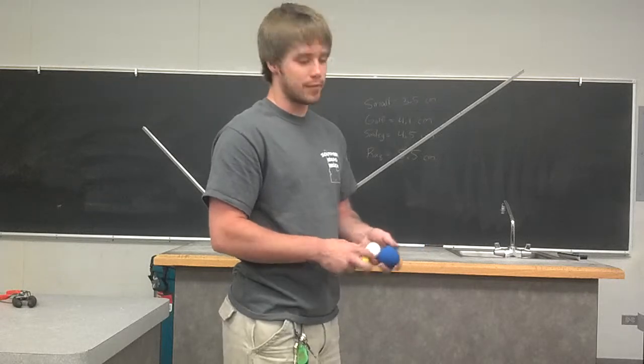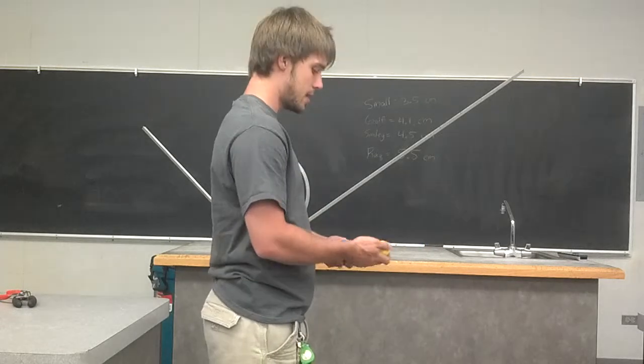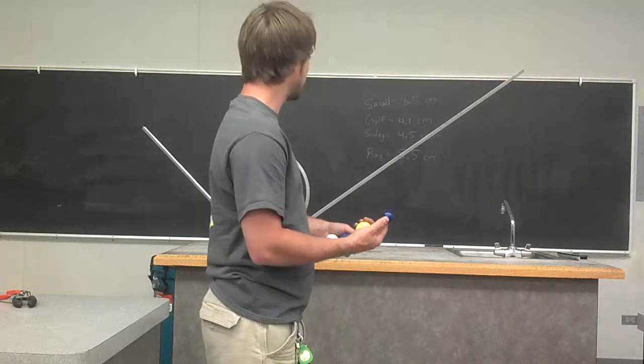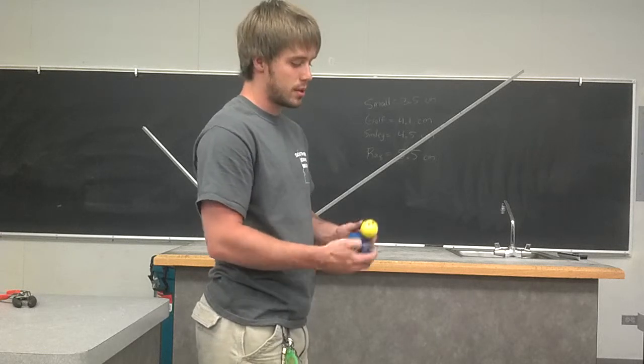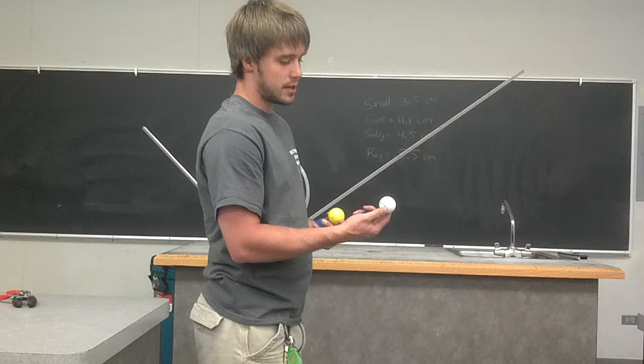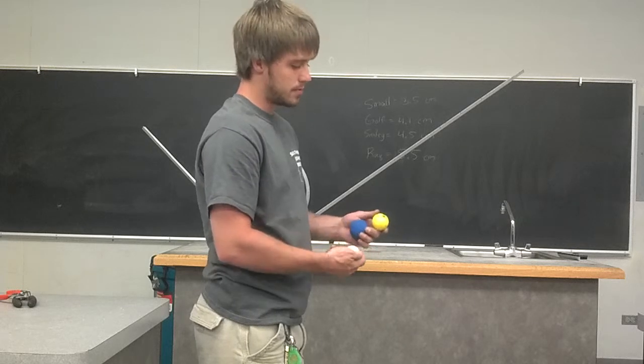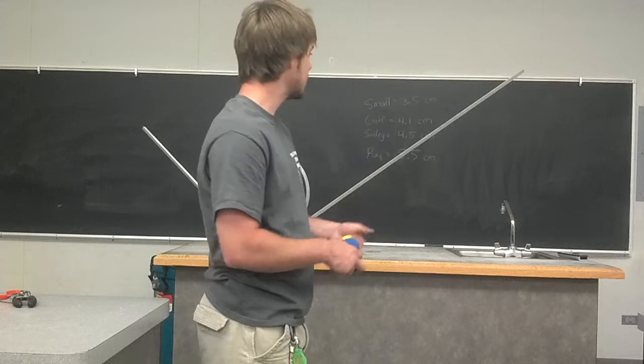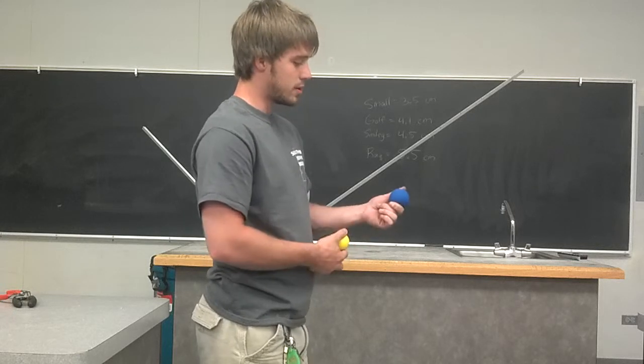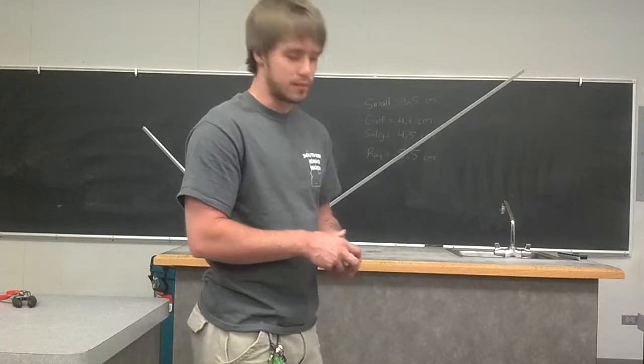I'm just going to include it in the video so you can see how they react. The small bouncy ball has a diameter of about 3.5 centimeters, the golf ball about 4 centimeters, the smiley face about 4.5 centimeters, and the racquet ball about 5.5 centimeters.